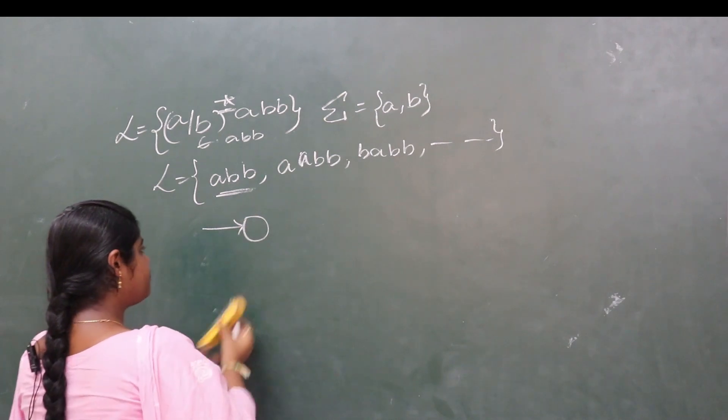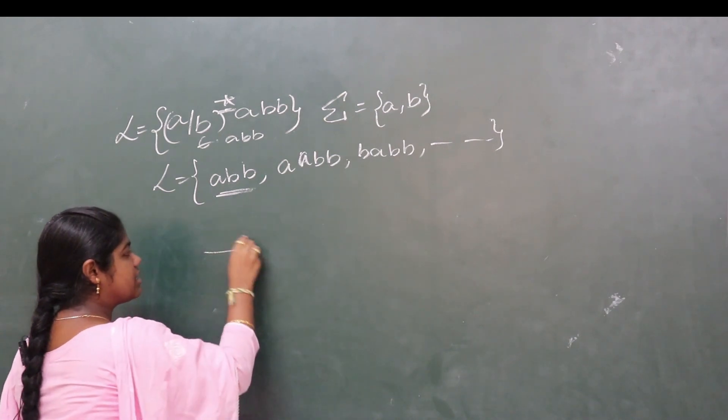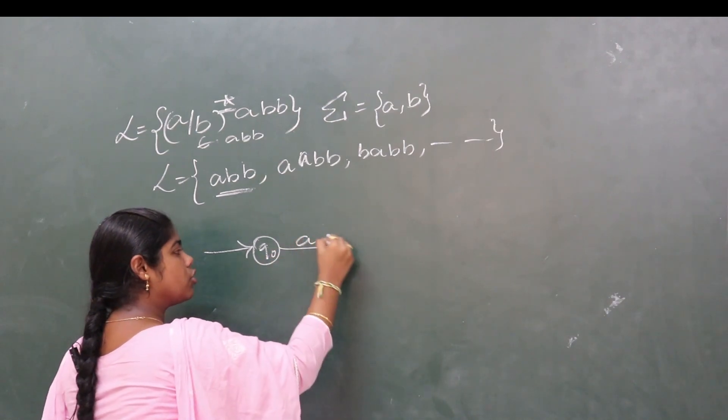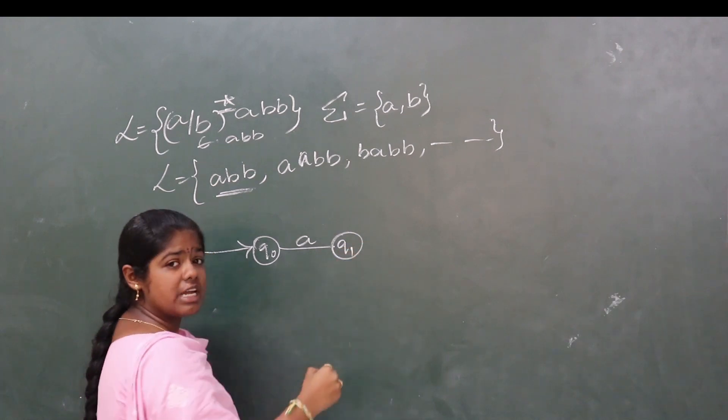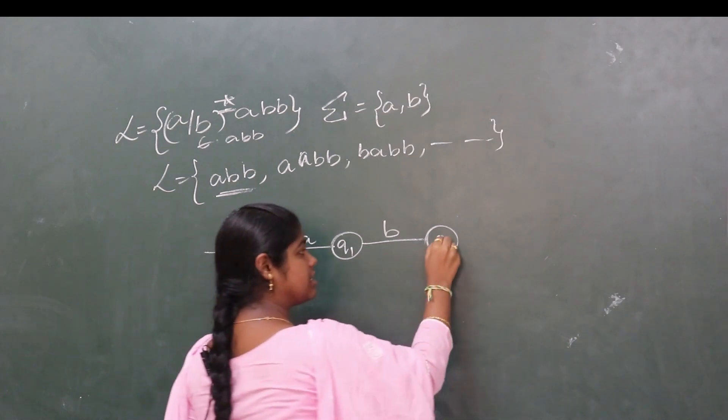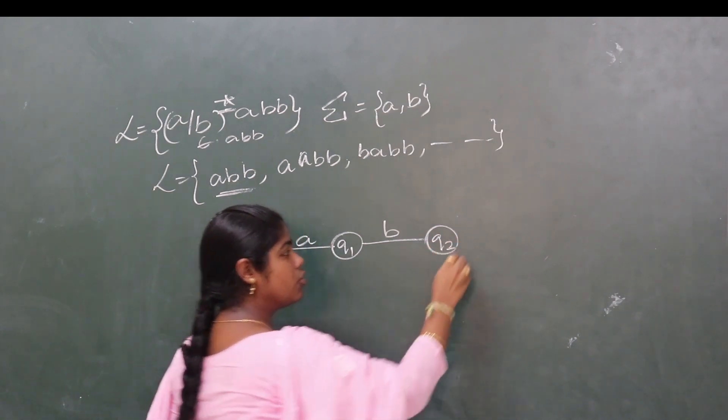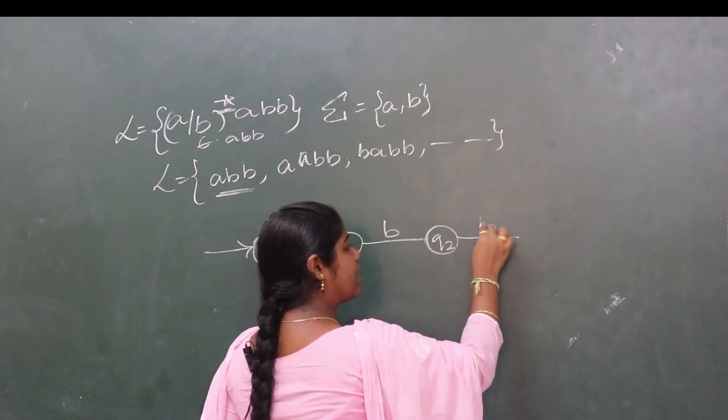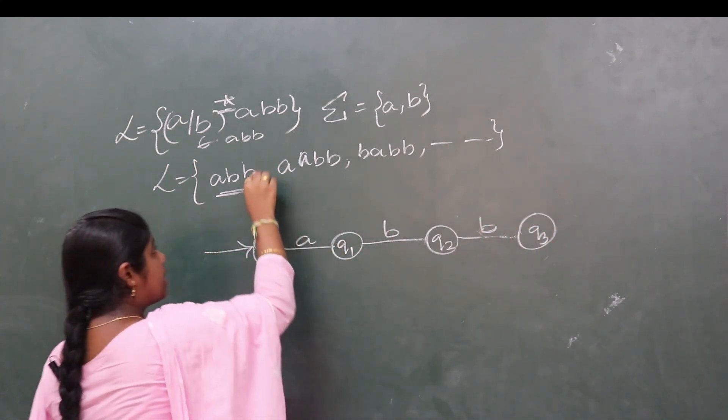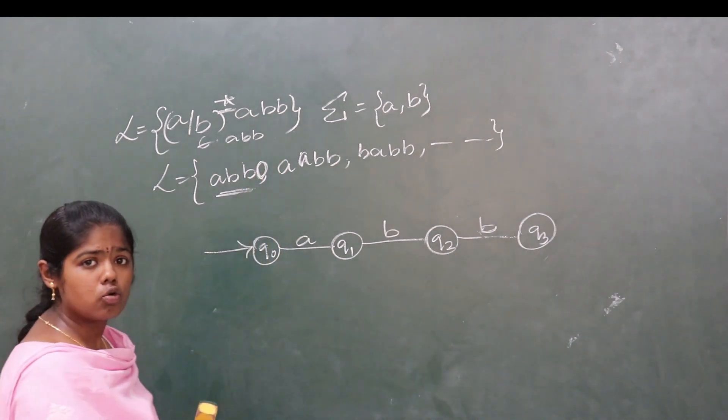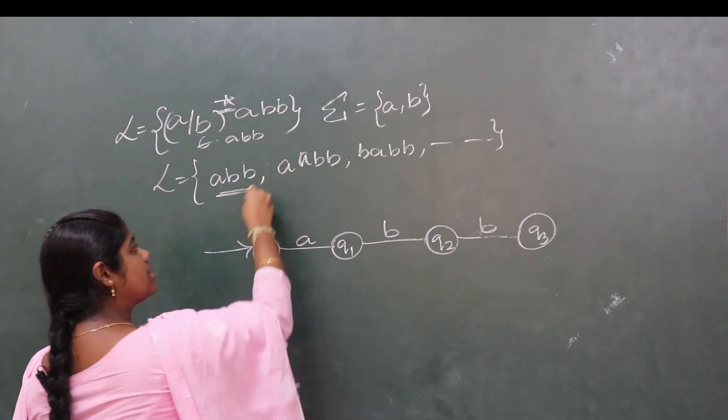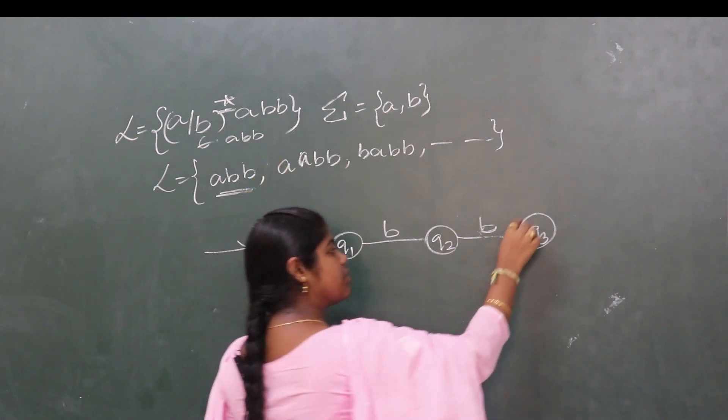Let the starting state be Q0. From Q0 on input a, transition to state Q1. From Q1 on input b, go to state Q2. From Q2 on input b, go to state Q3. Since there are no more variables for further transition, Q3 is the final state.